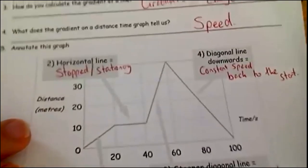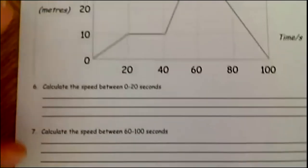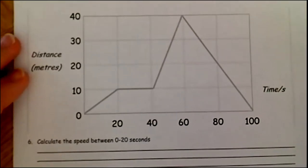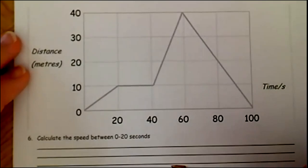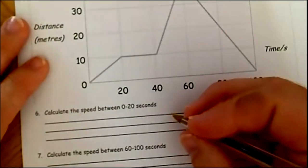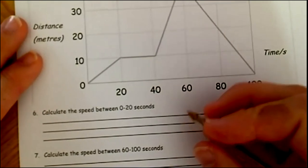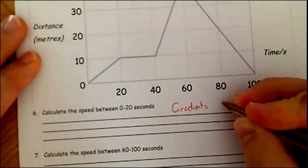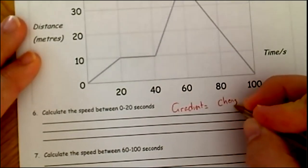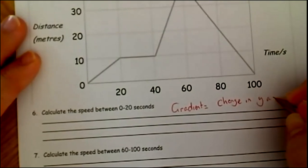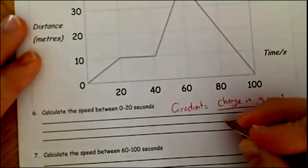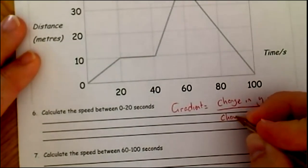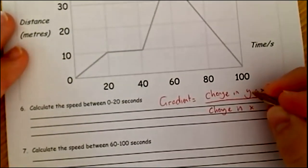The final bit I'm going to teach you today is on this question here, question six, question seven, which look like this, and we've been given a graph, and it wants us to calculate speed between zero and 20 seconds. We know that speed is equal to gradient of a line on a distance time graph. Gradient, remember, is equal to the change in y-axis divided by the change in your x-axis.